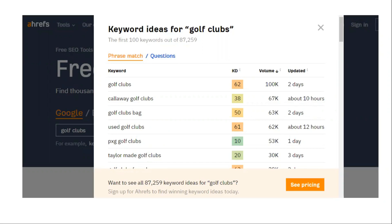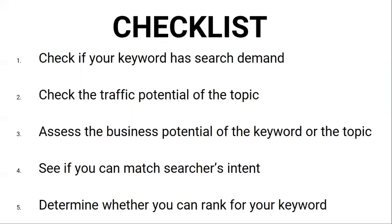The premium version has a ton of other helpful metrics, some of which we'll touch on later. But at the moment, as you can see, we have 87,000 keywords and it's just way too much to filter through. So before we continue, let's take a second and revisit the five-point checklist from the first lesson in this module. The five things we are looking for when choosing keywords are: one, keywords that have search demand; two, keywords with traffic potential; three, keywords with business potential; four, we need to be able to match search intent; and five, we want to know how hard it will be to rank at the top of Google for that keyword.